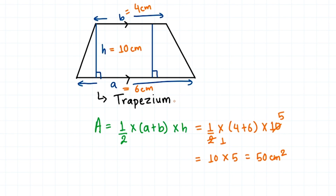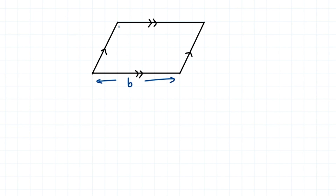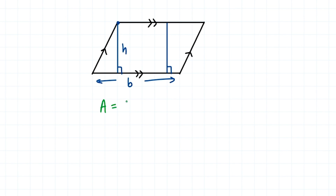Now, what if both pairs of sides of our quadrilateral are parallel to each other? In that case, we get a parallelogram. To find the area of a parallelogram, we need the base B and the height H. The height must touch both parallel lines at 90 degrees — it can be drawn from anywhere, not just the corner. The formula to find the area of a parallelogram is simply base times height — there is no 1/2.